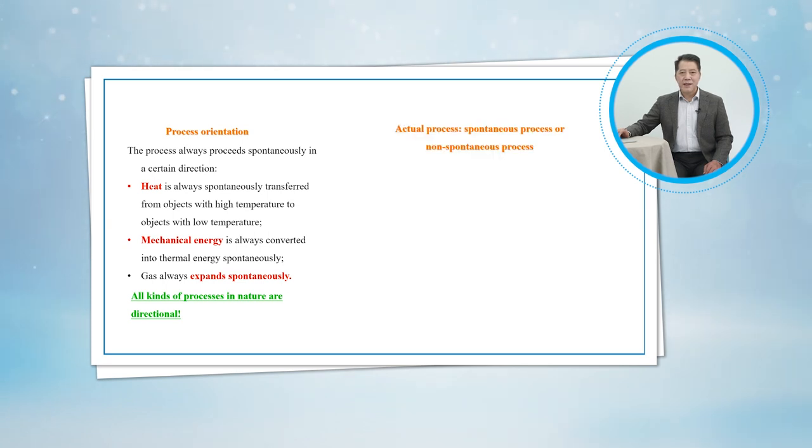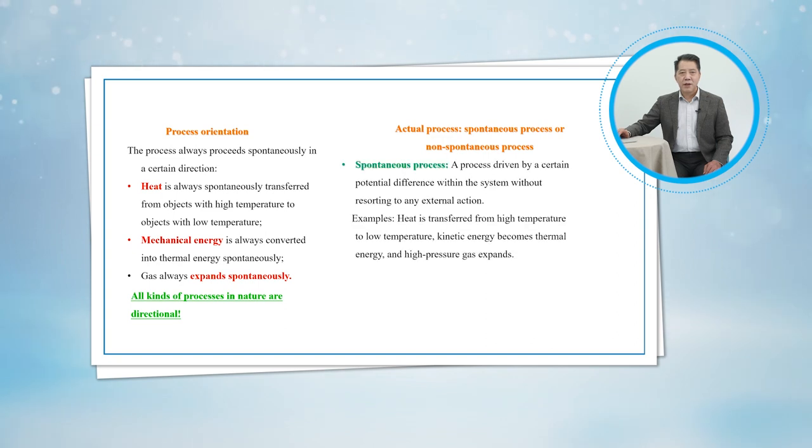The actual processes can be divided into spontaneous processes or non-spontaneous processes. The spontaneous process is a process driven by a certain potential difference within the system without resorting to any external action. Examples: Heat is transferred from high temperature to low temperature, kinetic energy becomes thermal energy, and high pressure gas expands.